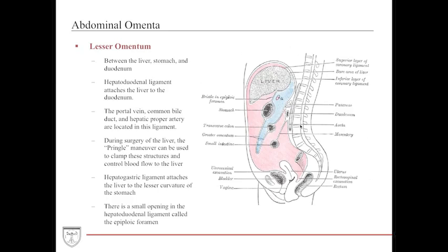During surgery, a maneuver called the Pringle maneuver allows the surgeon to clamp down on the hepatoduodenal ligament to stop blood flow from the portal vein and hepatic proper artery, helping control blood flow to the liver in instances of liver laceration. The lesser omentum is also composed of the hepatogastric ligament, which attaches to the lesser curvature of the stomach and goes to the liver. A small opening called the epiploic foramen allows access into the lesser sac.